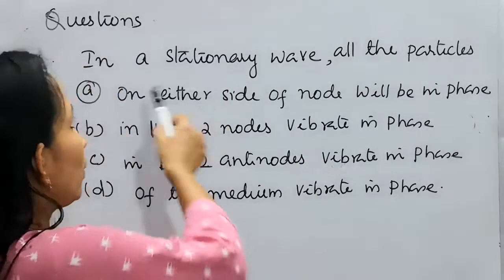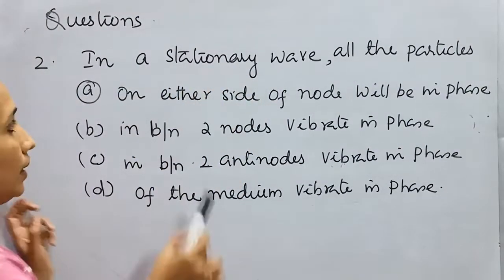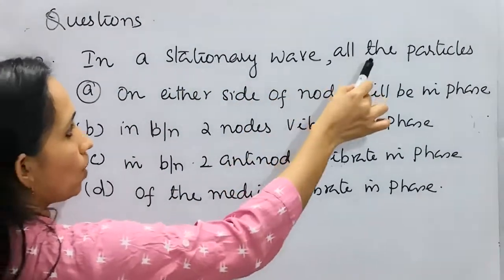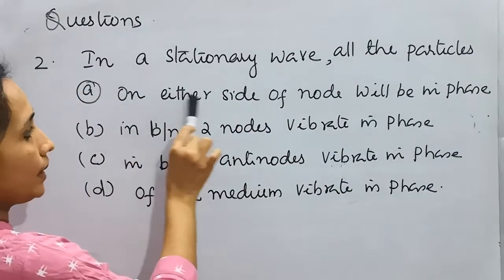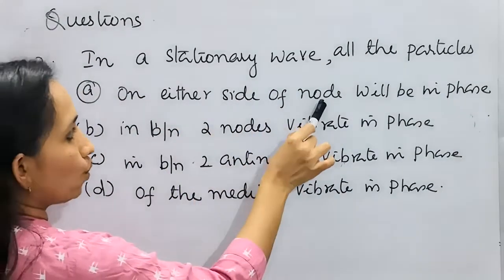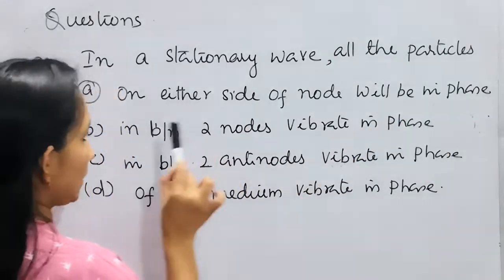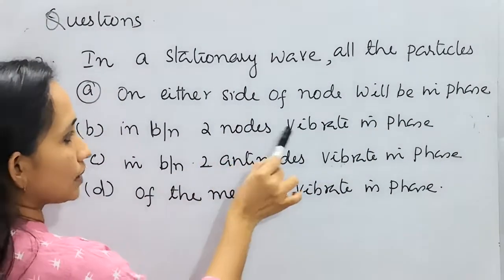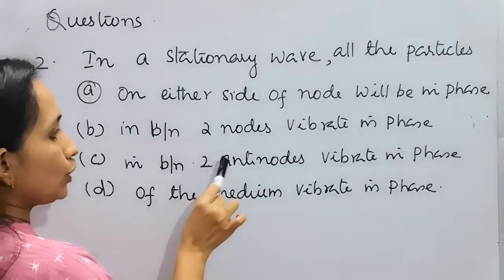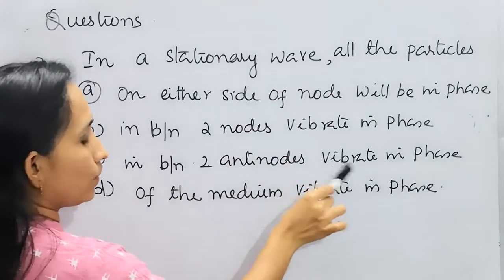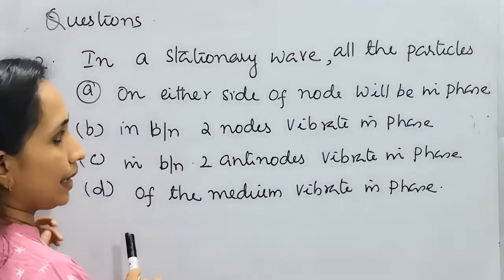Now coming to question number 2. In a stationary wave, all the particles optionally on either side of the node will be in phase; particles in between two nodes vibrate in phase; particles in between two anti-nodes vibrate in phase; all particles of the medium vibrate in phase.